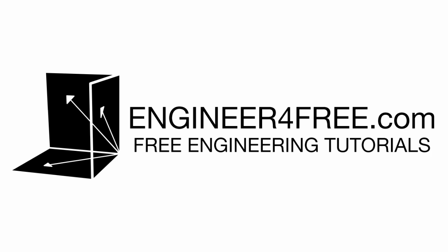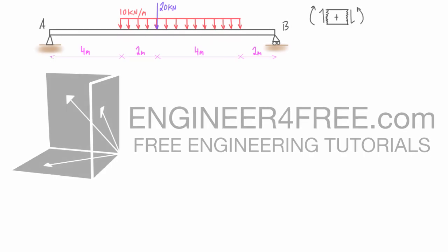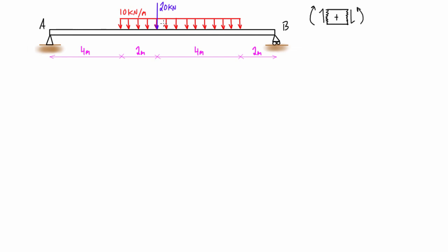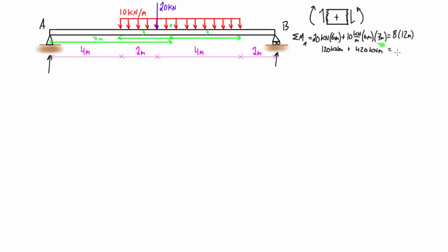Welcome back. In this video we are looking at practice problem number two for drawing shear force diagrams and bending moment diagrams. We have a simply supported beam with a somewhat randomly placed distributed load and a point load residing somewhere inside of that. The first thing we want to do is use our free body diagram to find the reactions A and B, which turn out to be 35 kN and 45 kN respectively.